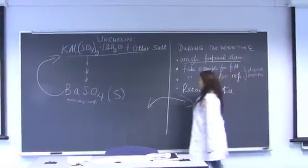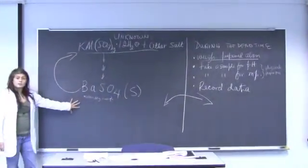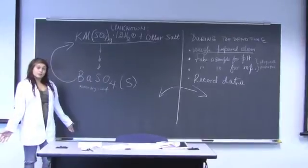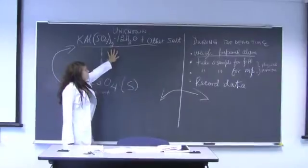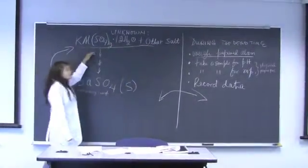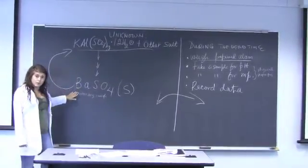But before we can start any of this part of the experiment, we need to start the main part of the experiment for week 2. So the main experiment for week 2 is we're going to be given an unknown which contains alum plus another salt. And we're going to be taking this through a series of reactions to create the precipitate barium sulfate.